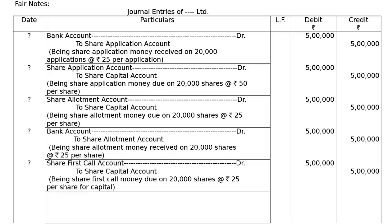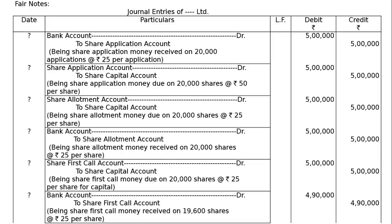Next is first call money received. We could not receive on 400 shares, so we received on 19,600 shares — because 20,000 minus 400 shares. That is bank account debited to share first call account — Rs.4,90,000 debit and credit. Being share first call money received on 19,600 shares at the rate of Rs.25 per share.